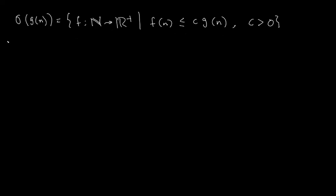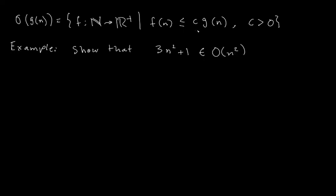Using this definition, I first want to solve the following example: we're going to show that 3n² + 1 is in big O of n². This is just to see how to use the definition and find the value of c. In order to show this, I have to show that f(n) satisfies the condition. Clearly, f(n) = 3n² + 1 and g(n) = n², because I want to show that f(n) is in big O of g(n).